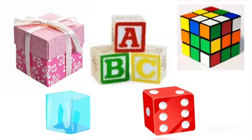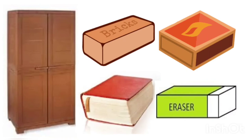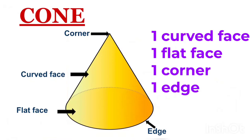Cuboid. In a cuboid, you can see there are some edges, faces, and corners. Let us see how many edges, faces, and corners are there: six faces, eight corners, and twelve edges. These are some examples of cuboid: almira, brick, matchbox, book, and eraser.